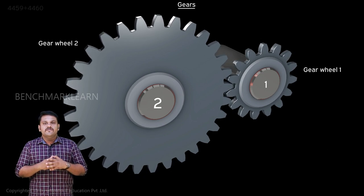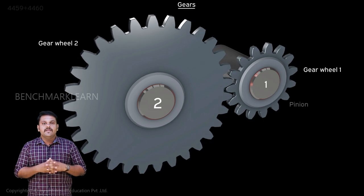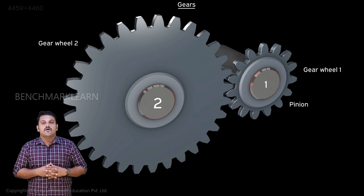When two gears of different sizes are in contact, the smaller gear is called the pinion and the larger one is called the gear.